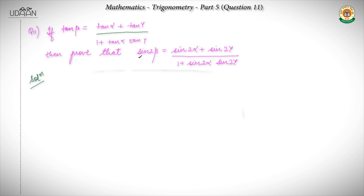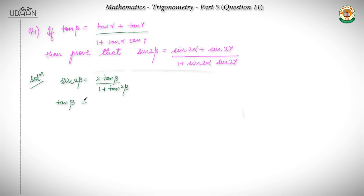In this question, when I have to prove sin 2β, since tan β is given, sin 2β equals 2 tan β upon 1 plus tan²β. So first of all, I will substitute the tan β value. Before substituting, I will simplify it, converting everything to sin and cos since we are more comfortable with those.